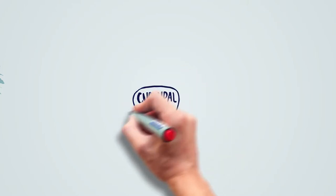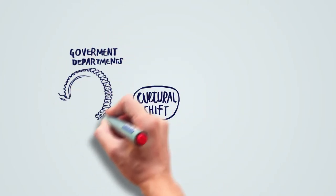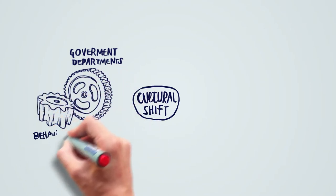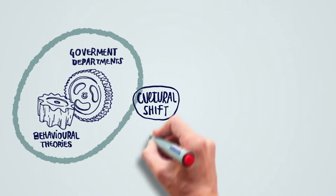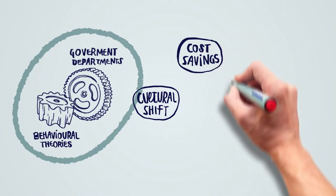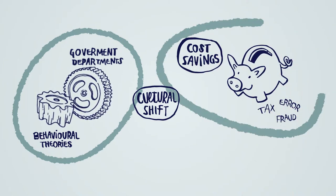The BIT has had a relevant impact in three spheres. The first one has to do with the cultural shift that has taken place across certain government departments, which are engaging with the use of behavioral theories in their policy-making practice. Here we can see change. The second point has to do with cost savings, especially in tax, error and fraud. We can collect more evidence on this point too.